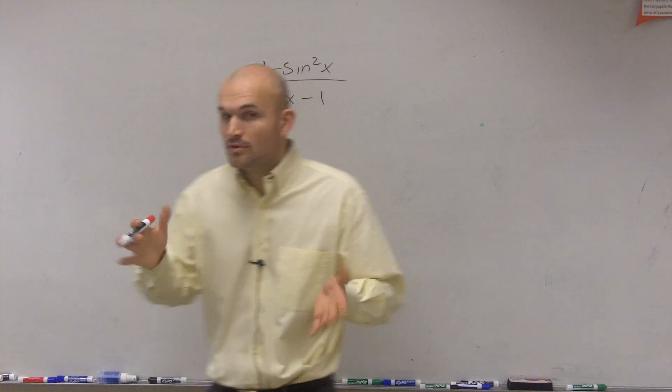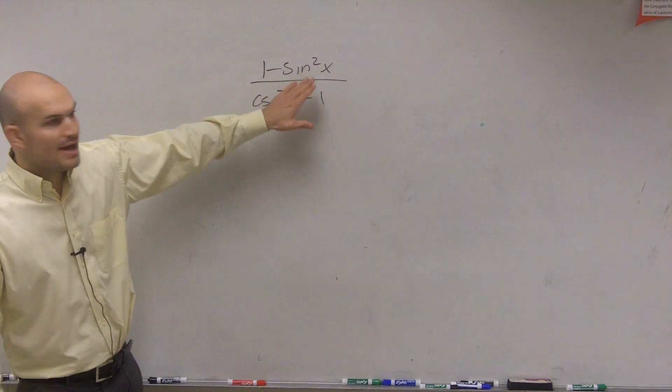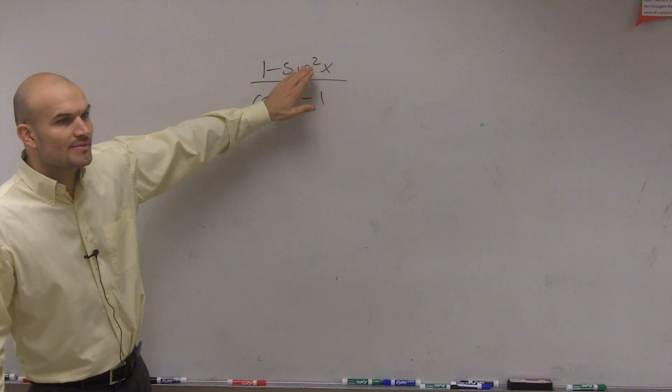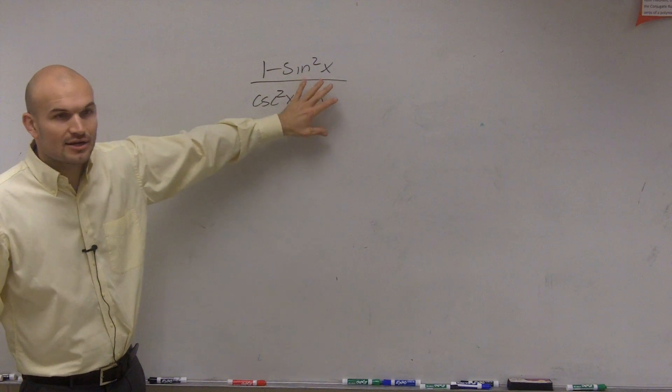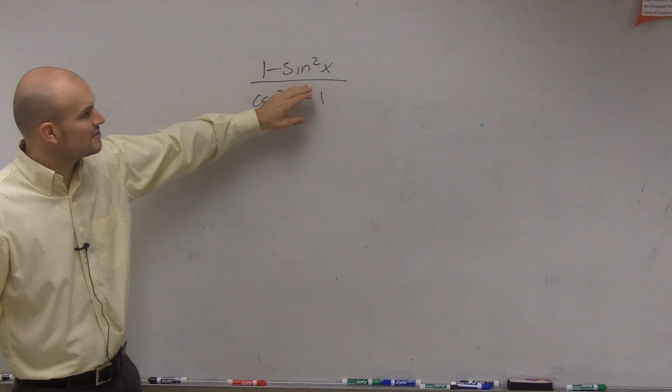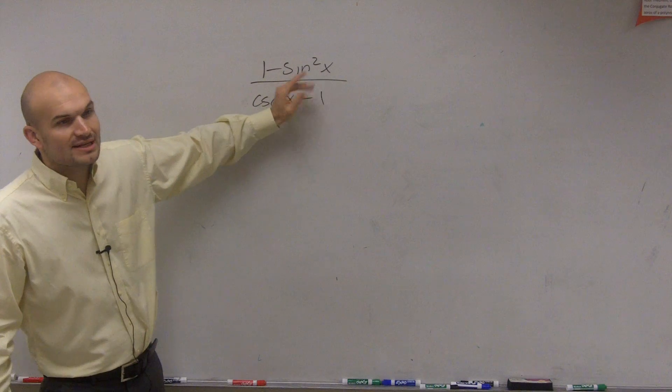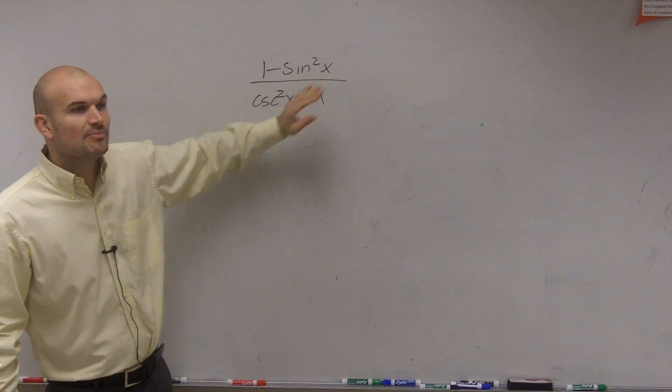When you have a trigonometric function squared, there's no other identity that's going to apply except for a couple of them. But the main important thing to get rid of that squared is by using the Pythagorean identities.